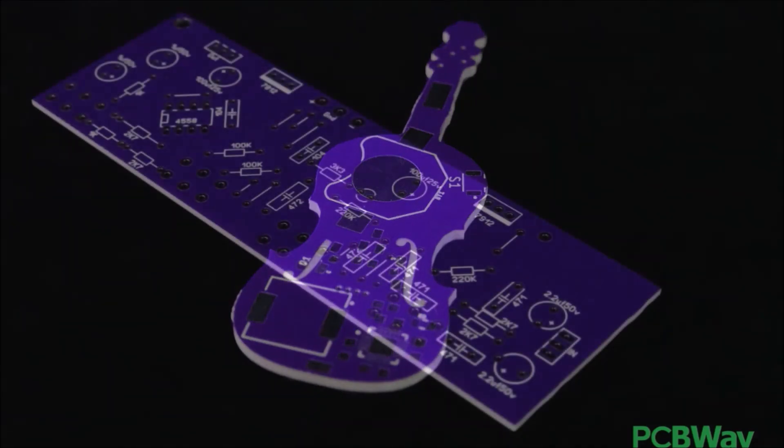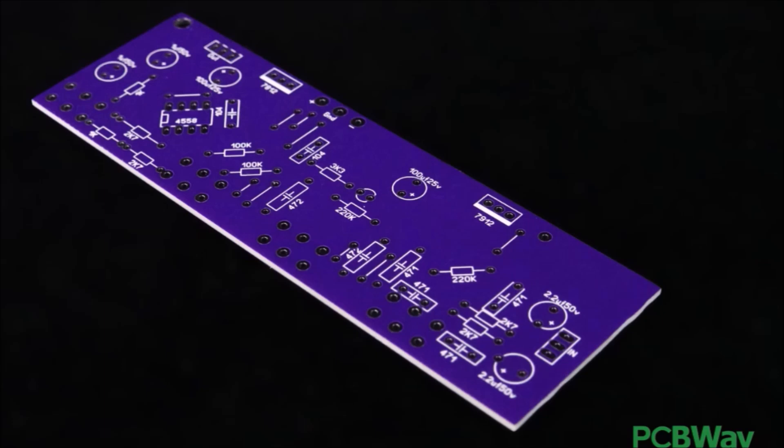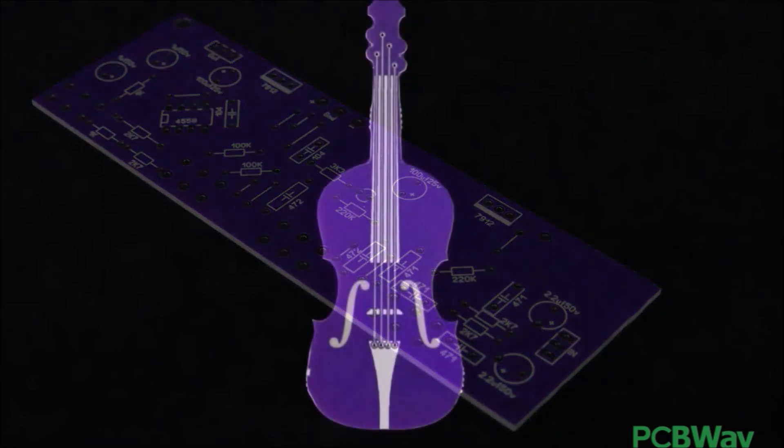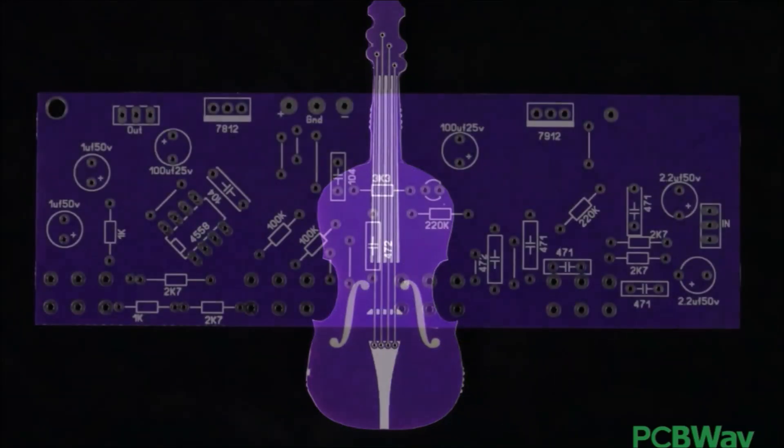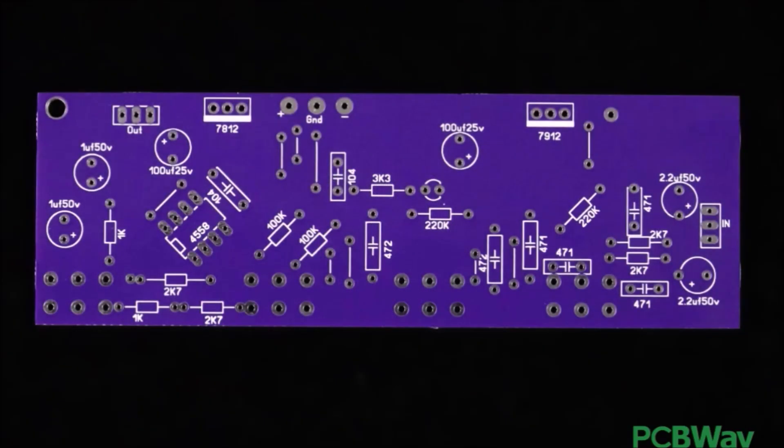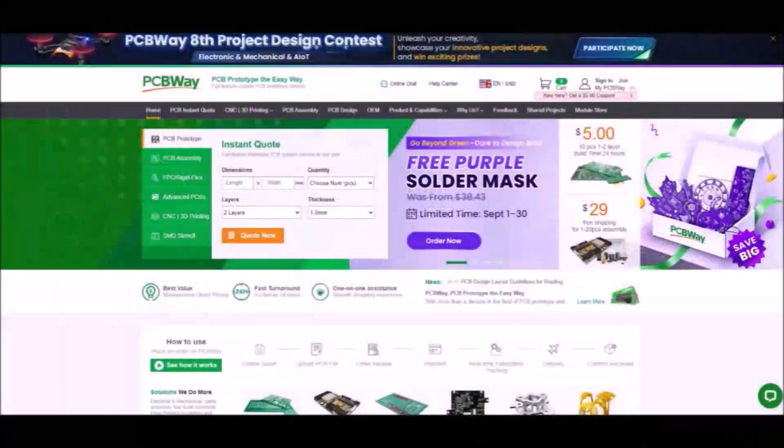From the 1st to September 30th, you can get 10 pieces of 2 layer, 100 on 100 mm PCBs in purple for only $5. PCBWay has all the services you need to create your project at the best price.